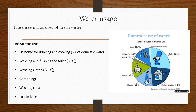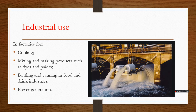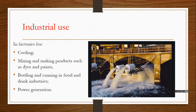For domestic use, water is used at home for drinking and cooking, washing and flushing the toilet, washing clothes, for gardens, washing cars, and some is lost through leaks or broken pipes. For industrial use, water is used in factories for cooling, for mixing and making products such as dyes and paints, for bottling and canning in the food and drink industry, and also for power generation — that is, hydroelectric power.